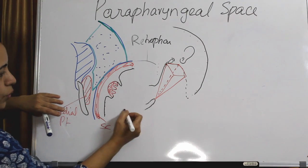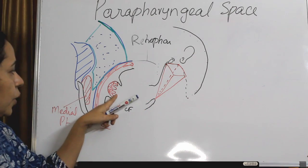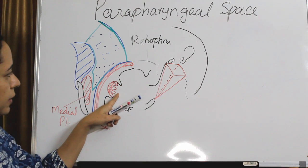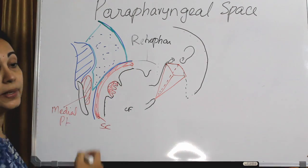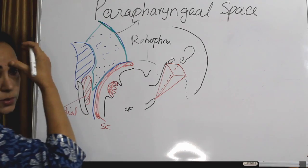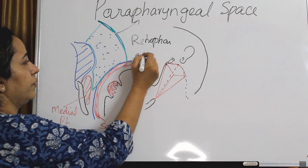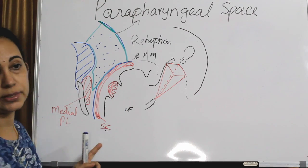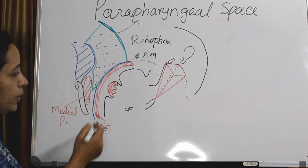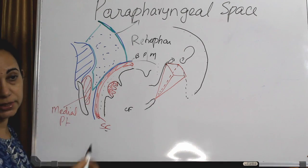From the oropharynx, going from medial to lateral: on opening the mouth you can see the tonsils on both sides, the uvula, then the superior constrictor muscle, then the middle layer of deep cervical fascia. The medial relation of this parapharyngeal space is the middle layer of deep cervical fascia, which forms the buccopharyngeal membrane overlying the superior constrictor muscle. Infections in the peritonsillar space can spread into the parapharyngeal space as a complication.